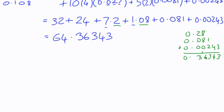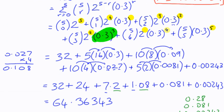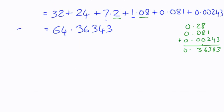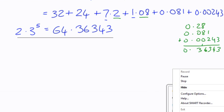And if you were to check that, we're basically saying that 2.3 to the power of 5 is 64.36343. You can go ahead and check that on a calculator, and you'll find that it's exactly the same. It's an interesting application. It's not very practical in that we normally would use a calculator, but it's a good way to see how the binomial theorem can be applied.